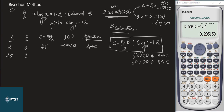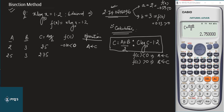For the next iteration, press CALC again. Enter A = Alpha C (i.e., 2.5) and B = 3. The calculator gives C = 2.75. Press equals to get f(C) = +0.008165, which is greater than zero — so we replace B by C. Write B = 2.75 in the table; A remains 2.5.